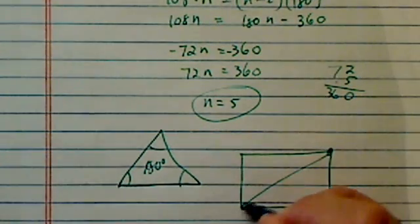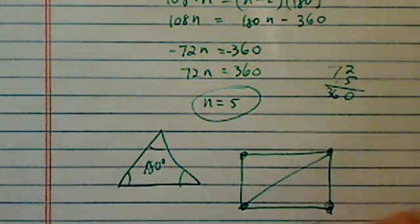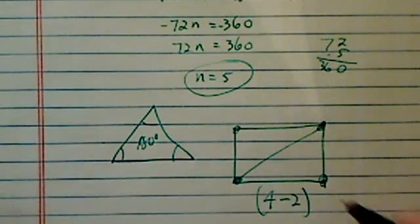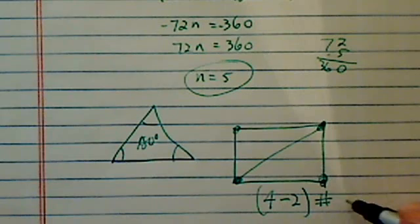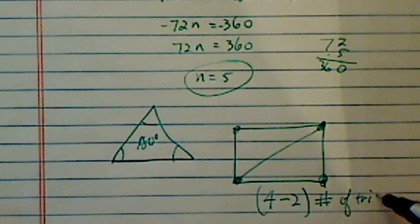The reason it's two is that if you have four corners, four minus two, because you needed two connected to actually make a triangle, this is equal to the number of triangles that you have.